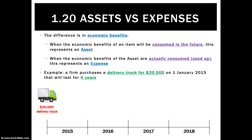Looking at an example: a delivery truck worth $20,000 that we bought on the 1st of January 2015, and it's going to last for four years. When the economic benefits of the truck are going to be consumed in the future, that means it will be an asset. But once the economic benefits of this truck are actually used up or consumed, it will become an expense.